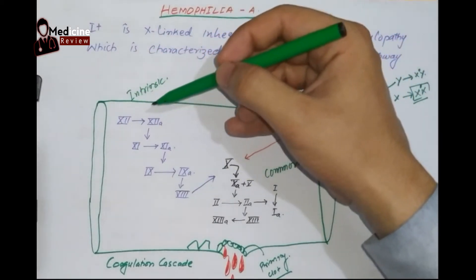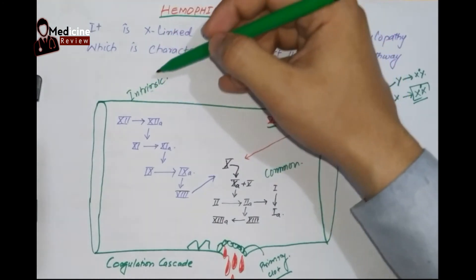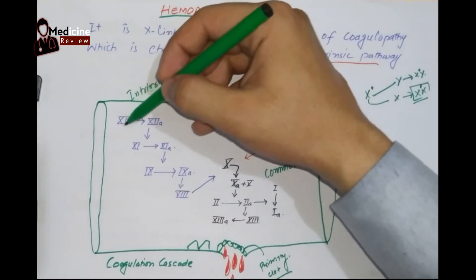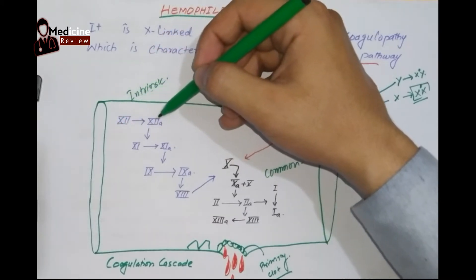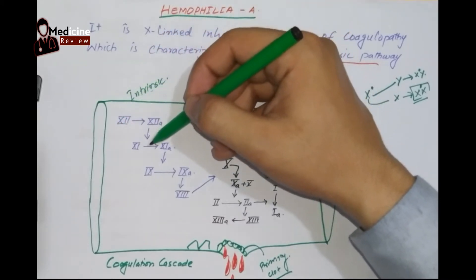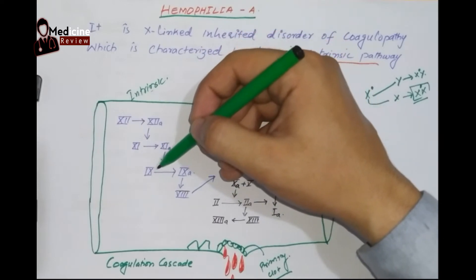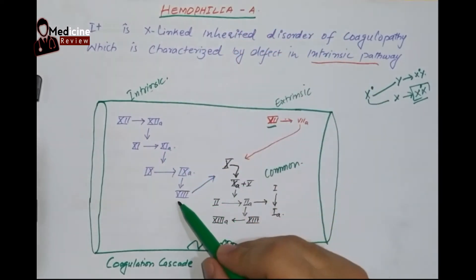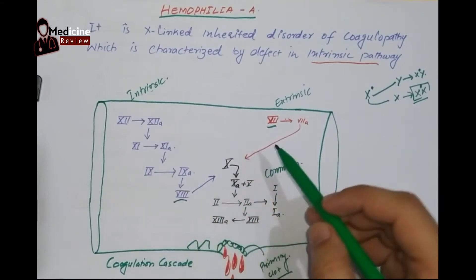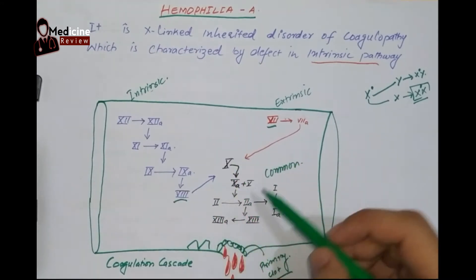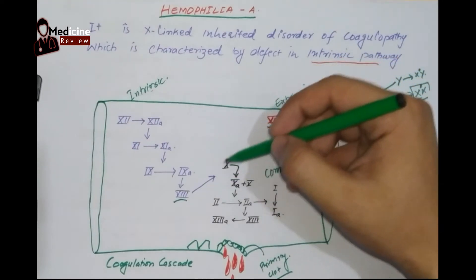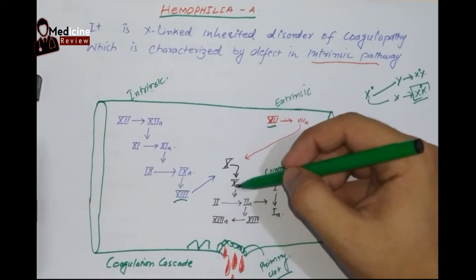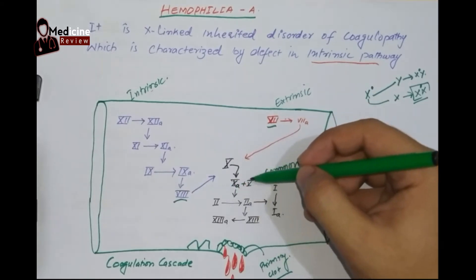The intrinsic pathway will also start this process. Factor 12, which is present and activated, will activate factor 11. Factor 11 will activate factor 9, and factor 9 will stimulate factor 8. This factor 8 will come into the common pathway. When both pathways come into the common pathway, factor 10 will be stimulated in the presence of factor 5.